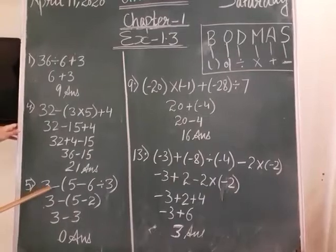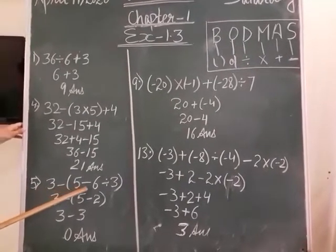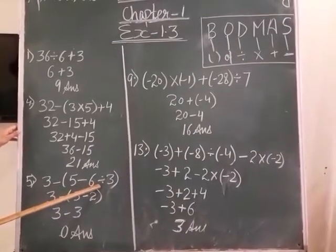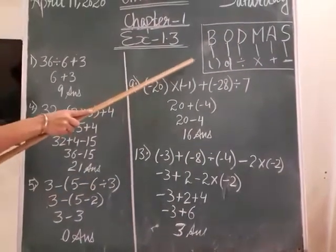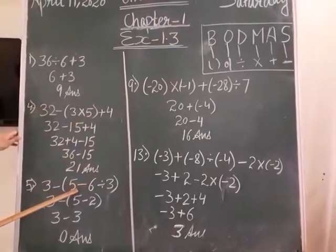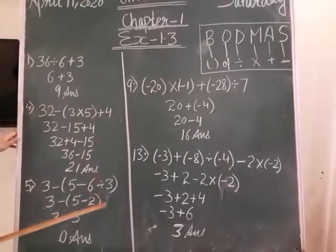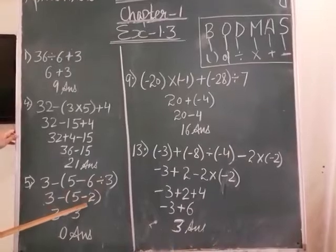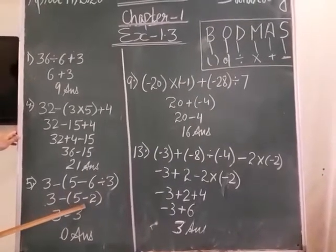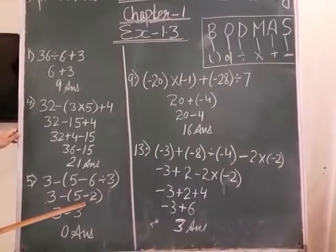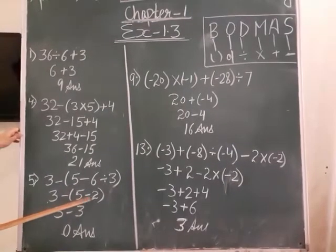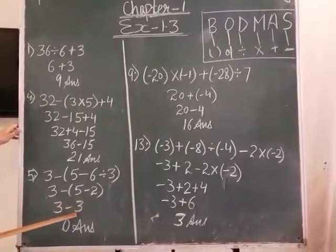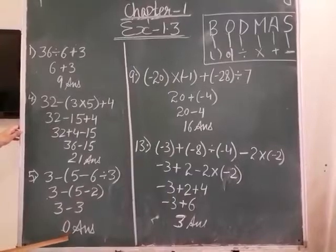The fifth sum is: 3 minus bracket (5 minus 6 divided by 3). Inside the bracket we have more than one operation, so we apply BODMAS again within the bracket. The only operation inside is division: 6 divided by 3 gives 2. There is no multiply, no addition, so we do subtraction: 5 minus 2 gives 3. Then outside: 3 minus 3 gives 0. The answer is 0.